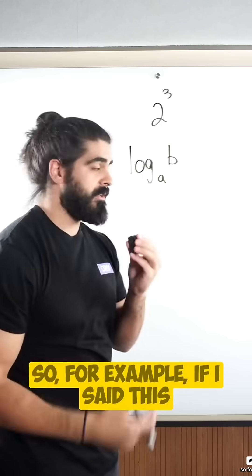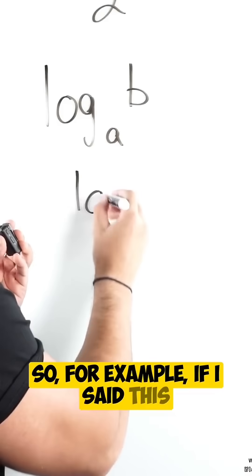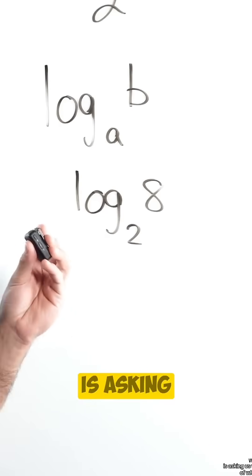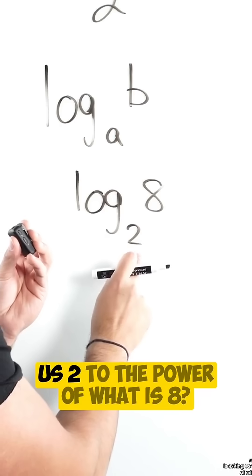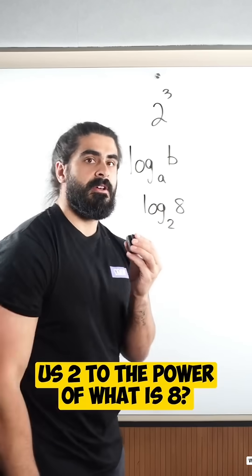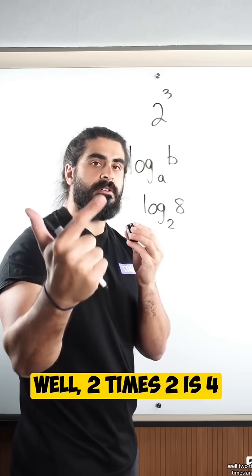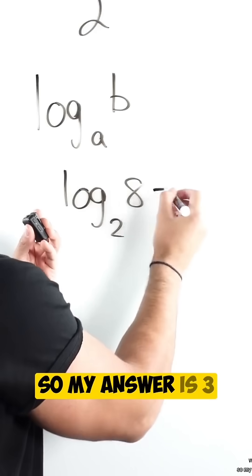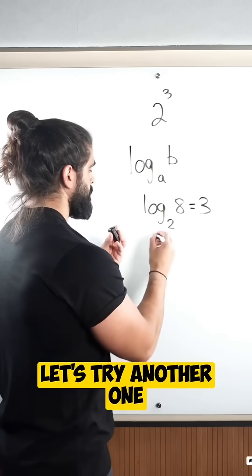For example, log base 2 of 8 is asking us: 2 to the power of what is 8? Well, 2 times 2 is 4, times another 2 is 8. So the answer is 3. Let's try another one.